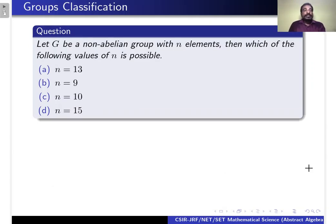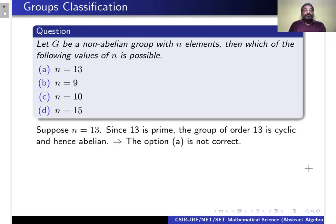The next question is: let G be a non-abelian group with N elements. Which of the following values of N is possible? When N = 13, and 13 is a prime number, any group of order 13 is cyclic, which means any group of order 13 is abelian. Therefore, option A is not correct.